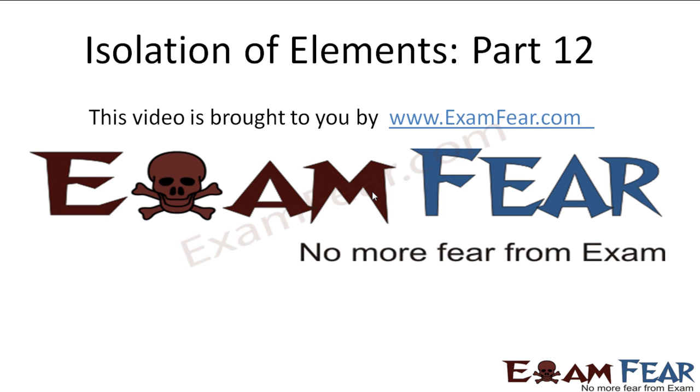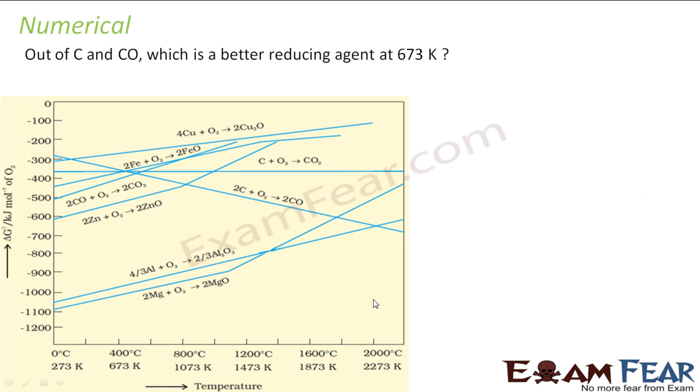Hello friends, this video on isolation of elements part 12 is brought to you by examfear.com. The question is: out of carbon and carbon monoxide, which is a better reducing agent at 673 Kelvin? The one which is in the lower range is a better reducing agent because the lower one has more negative Gibbs free energy change.